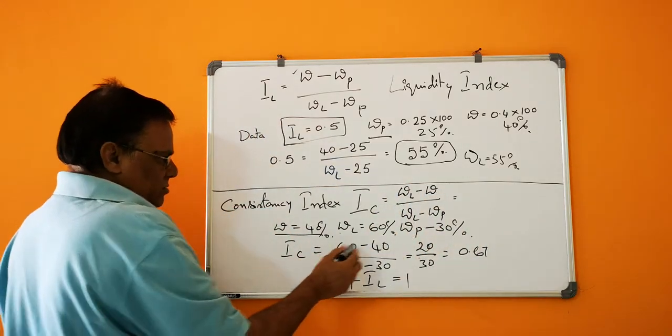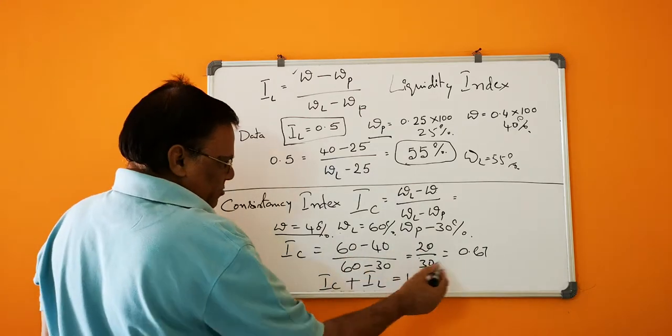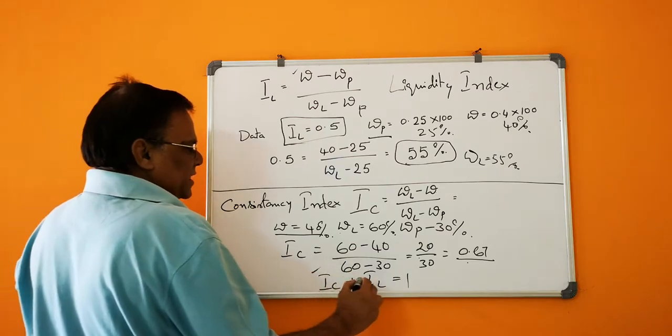So IC equals 60 minus 40 by 60 minus 30, it will be 20 by 30, which equals 0.67. If IC and IL,